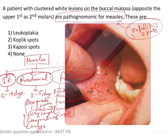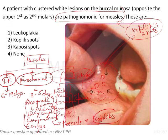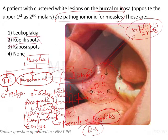There will also be conjunctivitis and coryza. These are the prodromal symptoms and they generally precede the pathognomonic sign, which is known as Koplik's spots. These prodromal symptoms generally appear two to three days before Koplik's spots. Koplik's spots are basically enanthematous reddish or sometimes grayish-white spots.